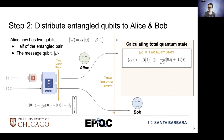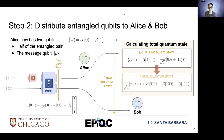ket zero zero plus ket one one, for the total quantum state once we distribute this tensor product.